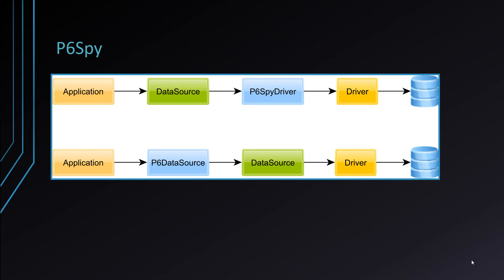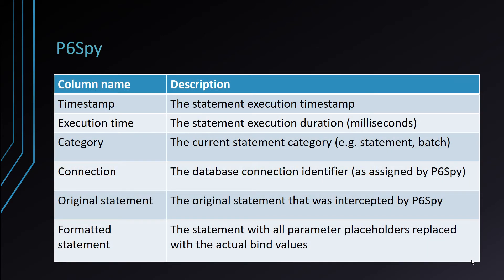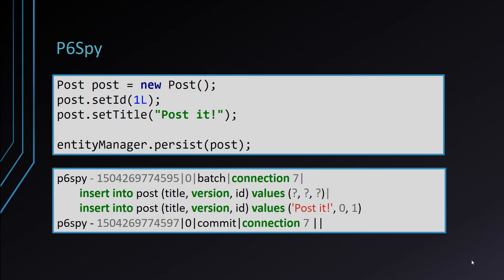P6Spy is an open-source framework that supports a declarative configuration approach via an external properties file. You can use P6Spy to proxy either the JDBC driver, which is very suitable for Java EE, or the JDBC data source, which is usually the case for Spring-based enterprise applications. P6Spy prints more than just the SQL statement itself — it can capture the current timestamp, the statement execution time, the statement type (simple or batched), the database connection used, the original statement with placeholders, and the SQL statement where placeholders are substituted with bind parameter values. If we use P6Spy and persist one post entity, the statement is going to be logged accordingly.